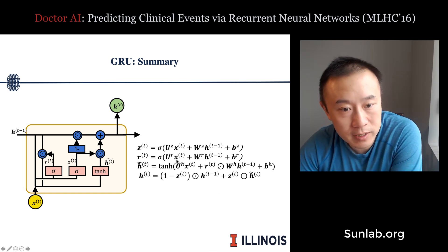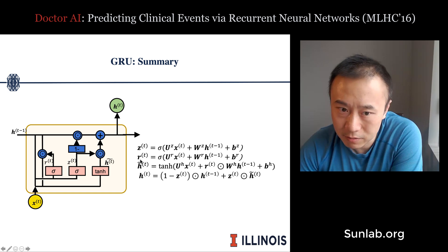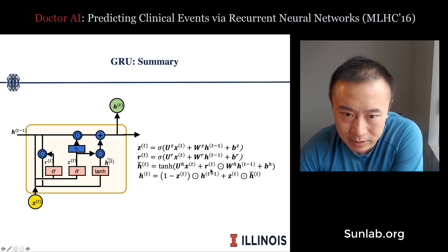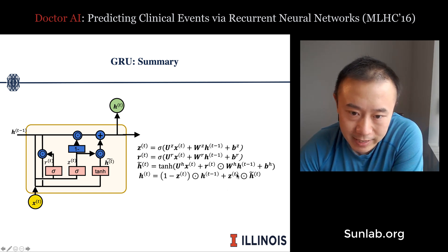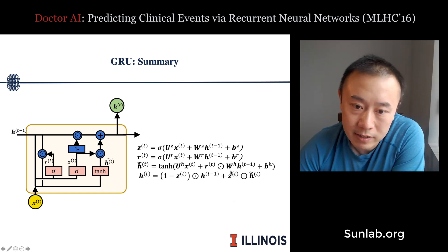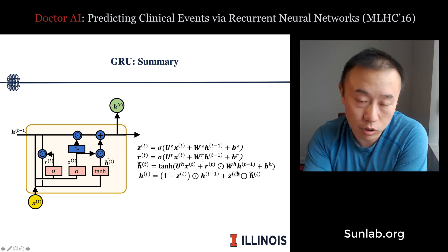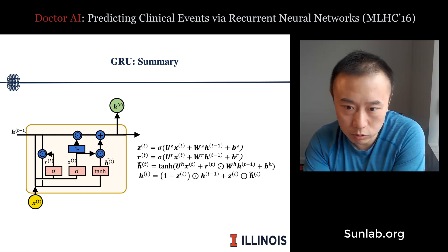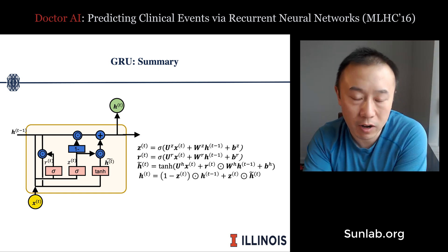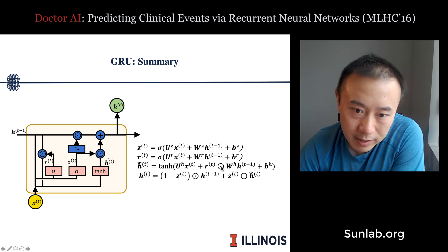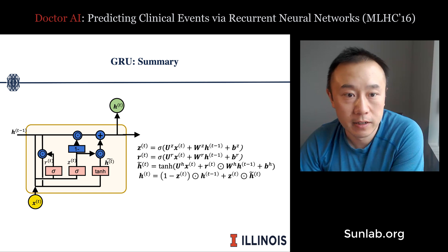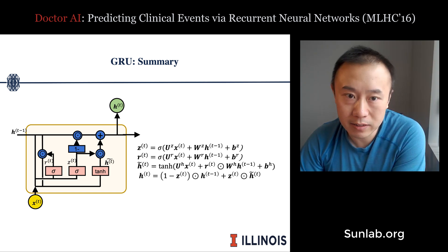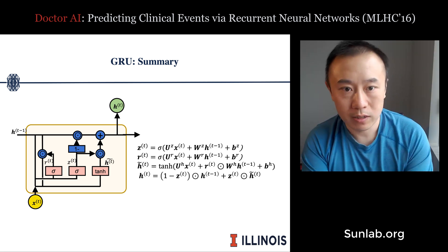One important thing to note: the gate is not a scalar — it's a vector. The element-wise multiplication means that if you have a 100-dimensional hidden vector, the gate vector is also 100-dimensional. This gives you 100 different gates controlling which dimensions of information can flow and which to shut. It's a multi-dimensional gating mechanism allowing some information to pass and some to stop.